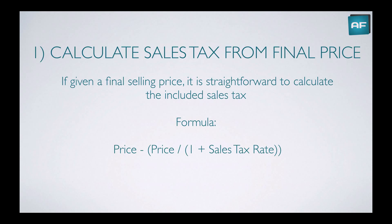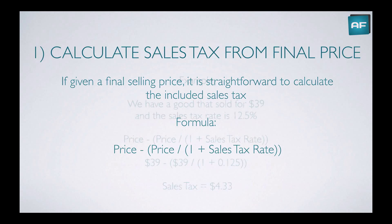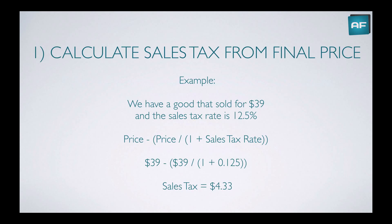So if you're given a final selling price, or if you purchase a product that includes sales tax, it's pretty straightforward to calculate the included sales tax. The formula is given on the screen — it's simply price minus price divided by 1 plus the sales tax rate. Here's an example: we have a good sold at $39, and we know the sales tax rate is twelve and a half percent.